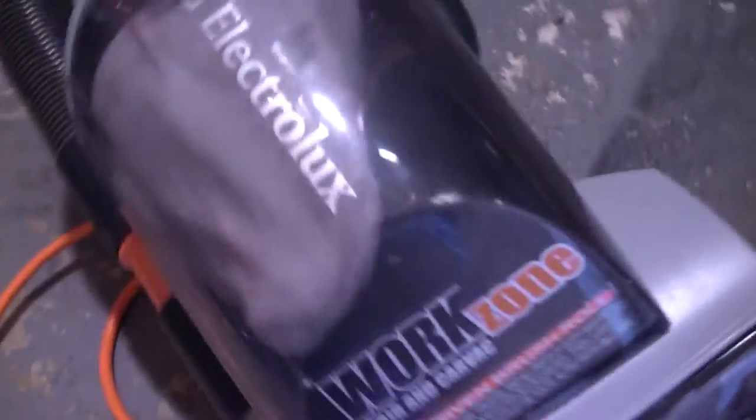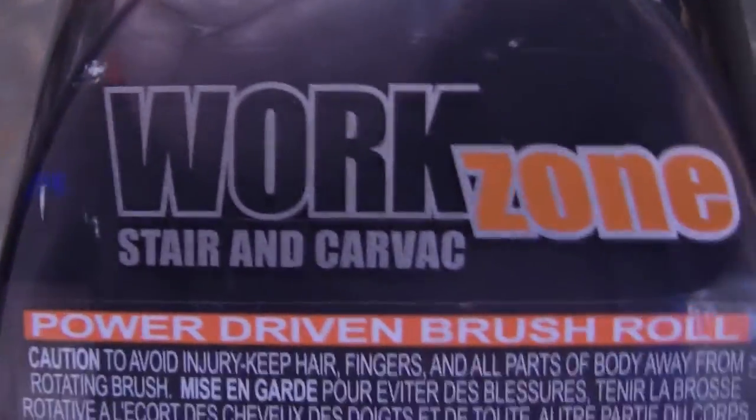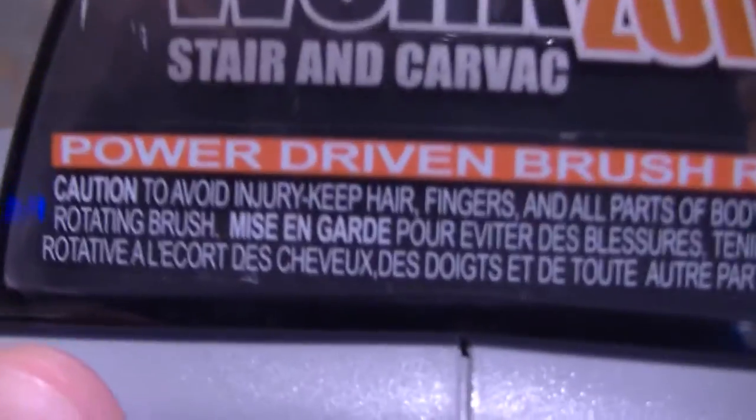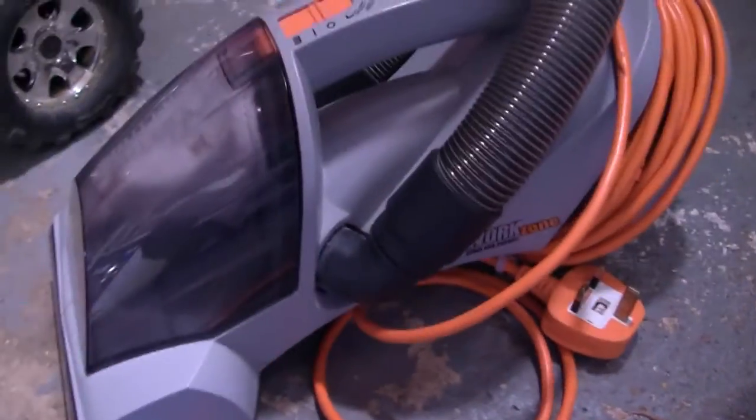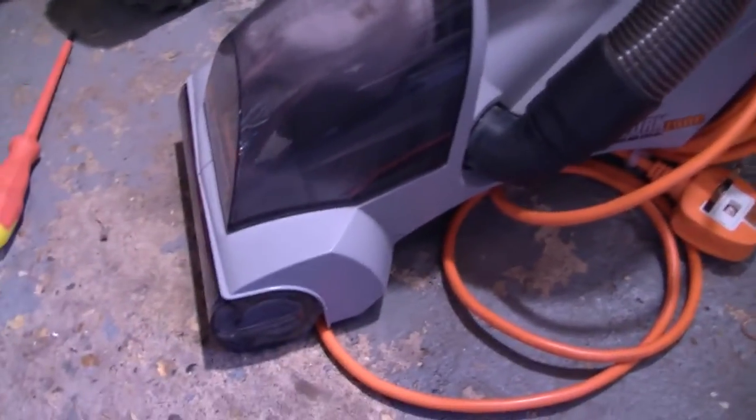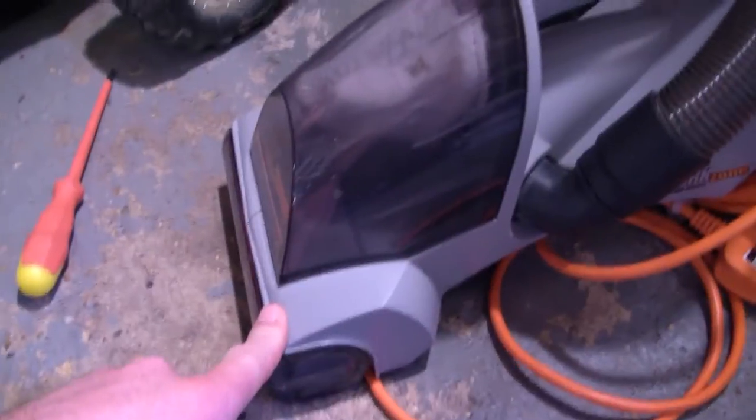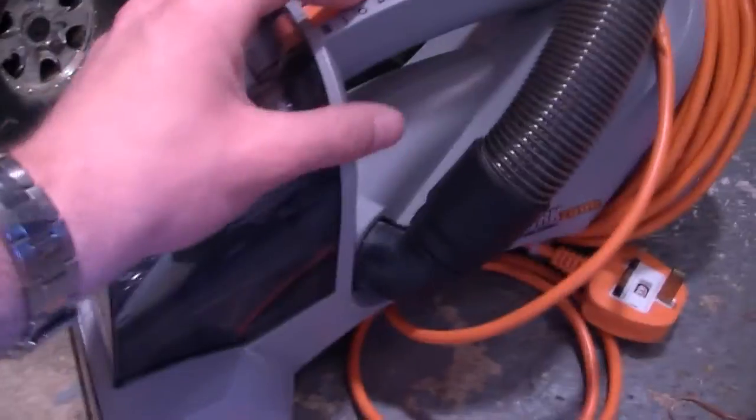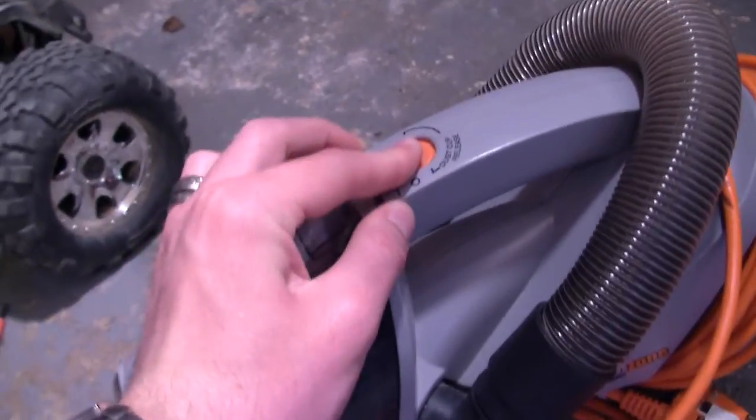It's Electrolux work zone stair and car vac, power driven brush roll. Well I'm not going to be using the brush roll, let's be honest. I don't have any carpet at work. I suppose I could use the brush roll on the seats in the machines or whatever, but other than that won't be needing the brush roll.